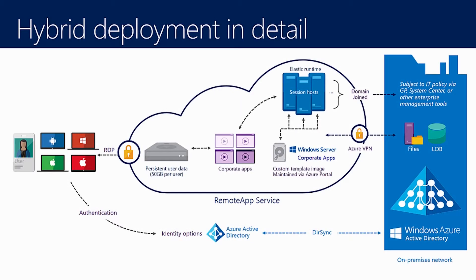We have the ability to not only access our line of business applications and back-end application servers, but also file shares and data residing in our on-premises infrastructure. Because we are accessing corporate data, we need to leverage our DirSync process to use corporate credentials to access this information and resources.